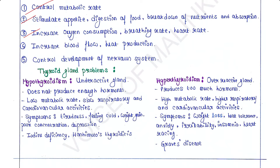Thyroid hormones increase blood flow, and as a result the body's heat production is increased. They also control the development of the nervous system. Two types of thyroid problems may occur.